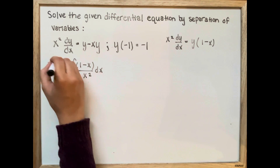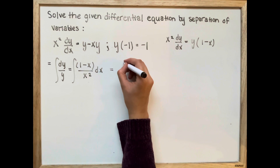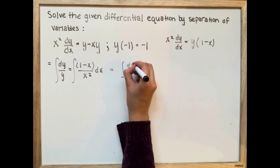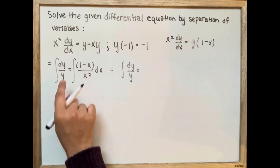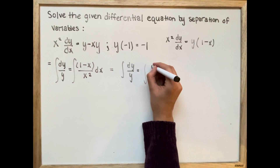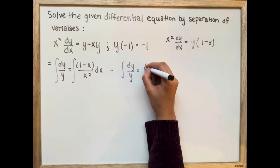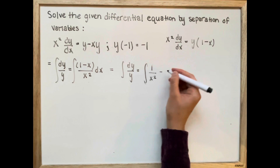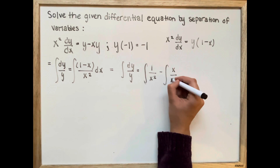Now we're going to take the integral of both sides. We're going to simplify the right side: the integral of 1 over x squared minus the integral of x over x squared.